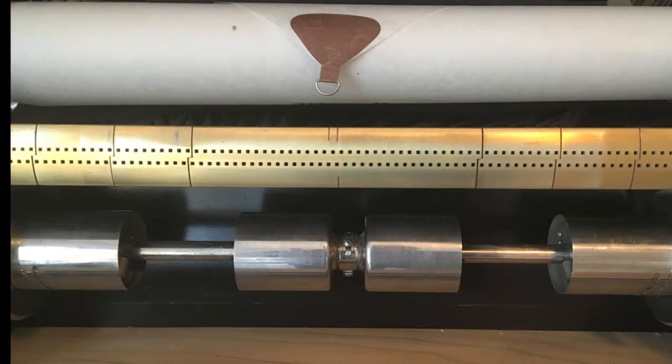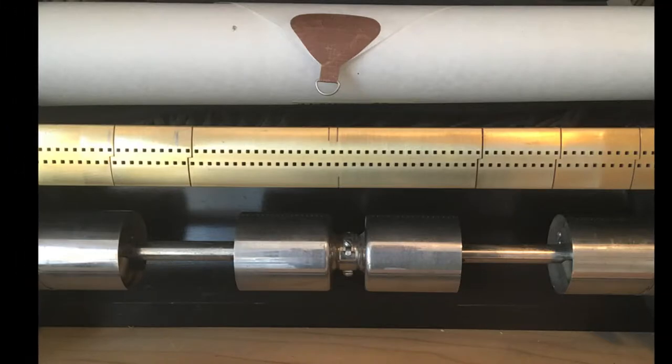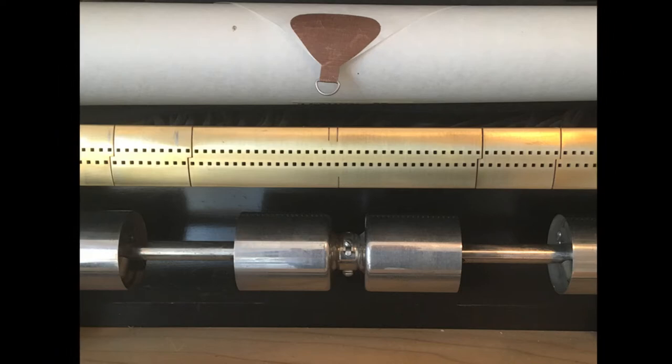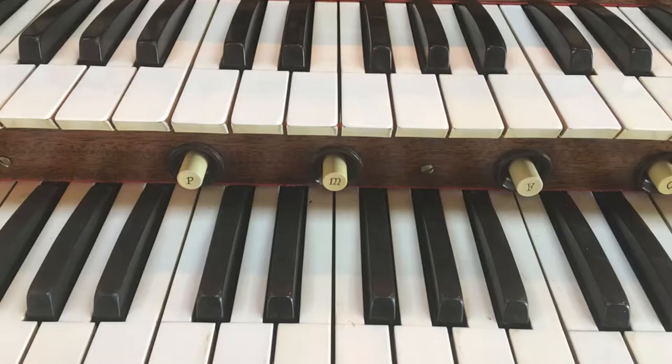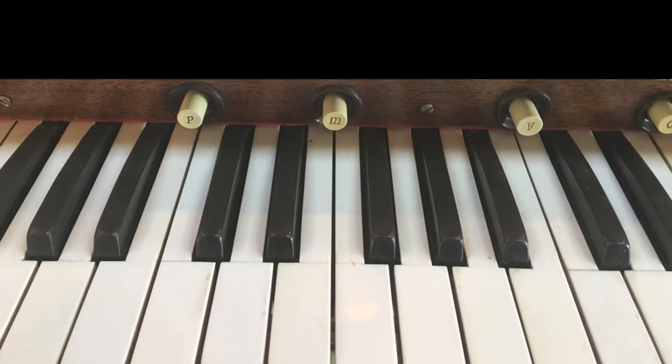In the center portion of the tracker bar are 116 holes that operate the notes. The top 58 center holes control this keyboard. The bottom 58 center holes control this keyboard.